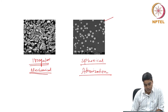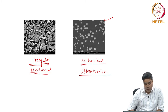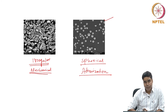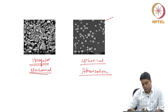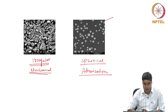Therefore, it is important for us to know how we can characterize the powder and get to know about this shape, size, and other powder properties, because such properties are going to affect the entire powder metallurgy process as such.